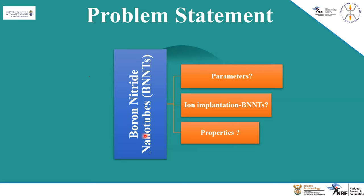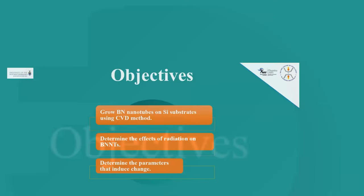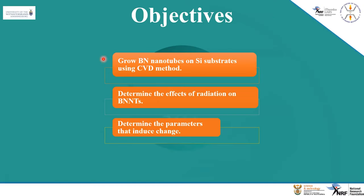For my problem statement: boron nitride and other boron nitride structures are normally synthesized under high temperature and pressure conditions. For this experiment, I will determine the parameters suitable for the growth of boron nitride nanotubes, see how ion implantation affects boron nitride nanotubes, and determine their properties. My objectives are to grow boron nitride nanotubes on a silicon substrate using chemical vapor deposition.